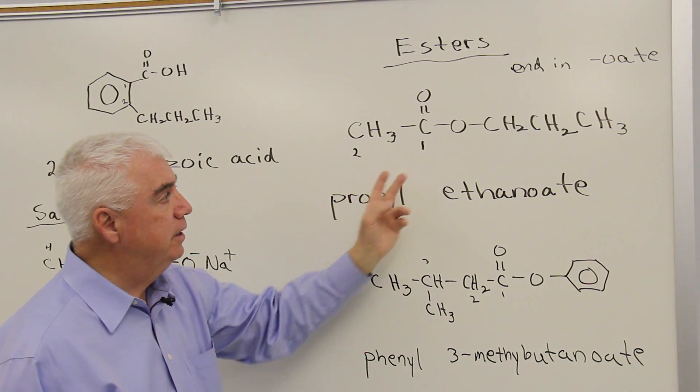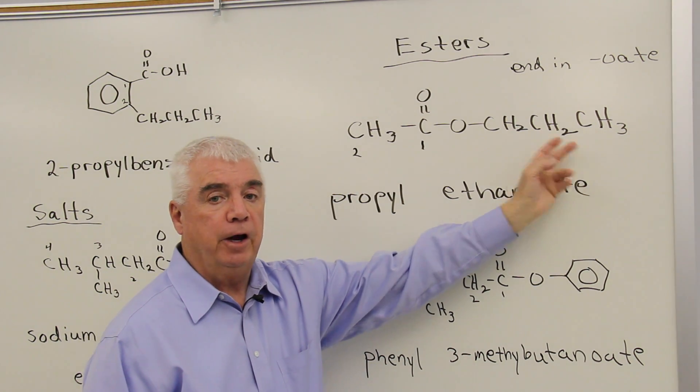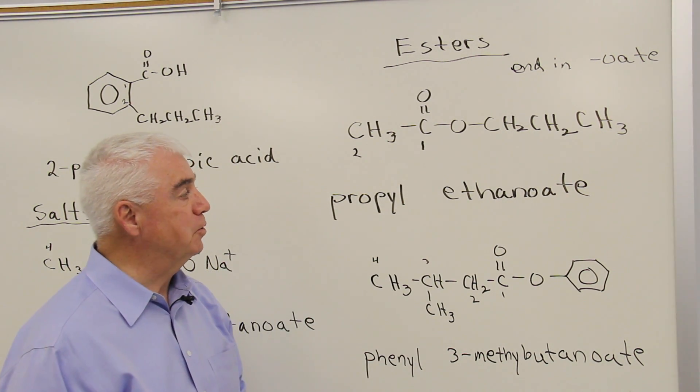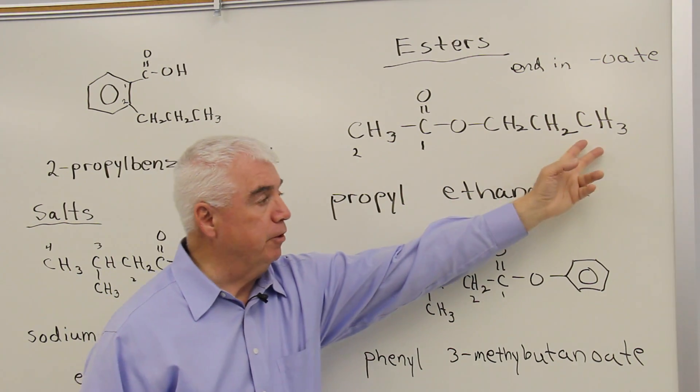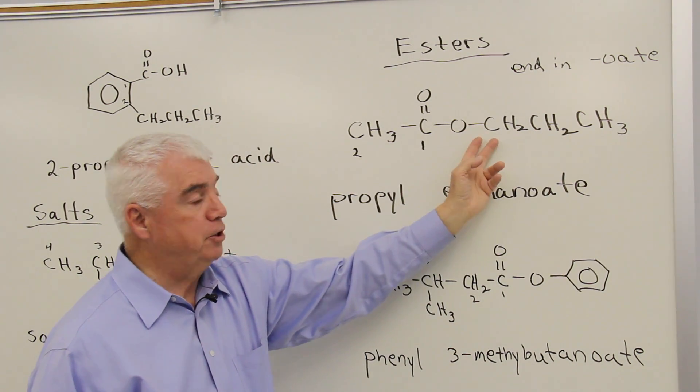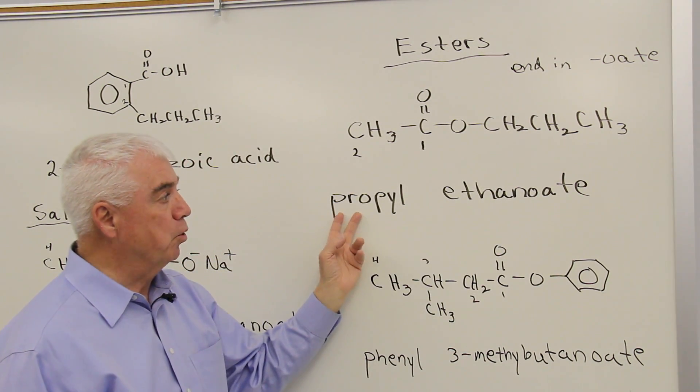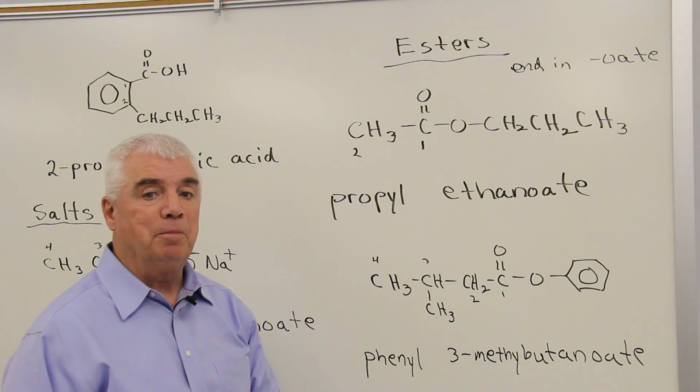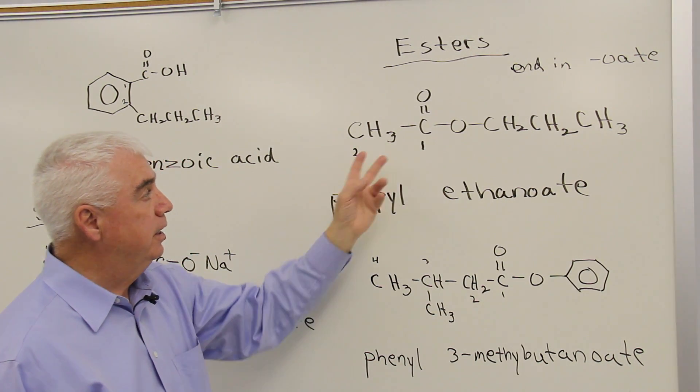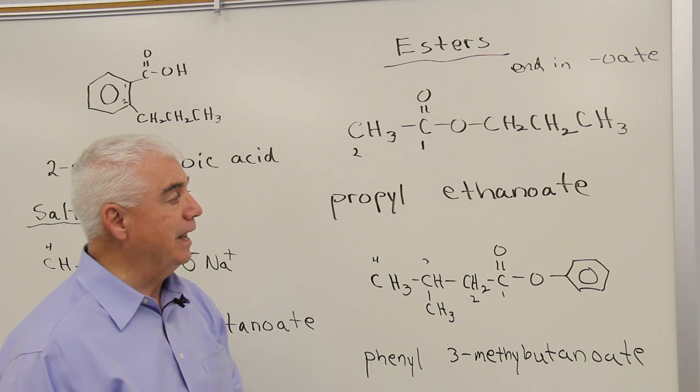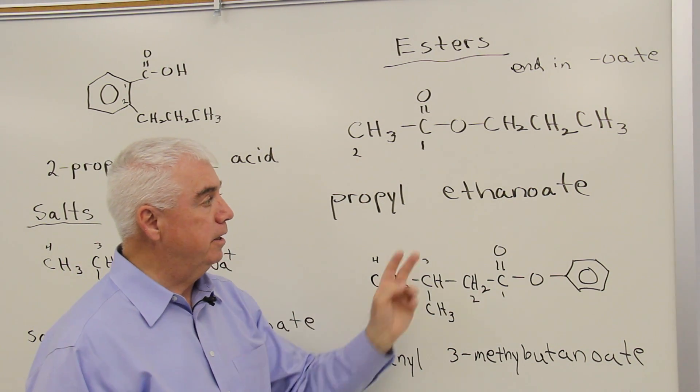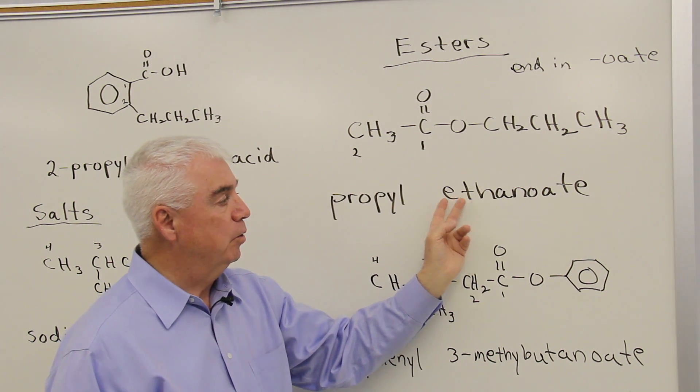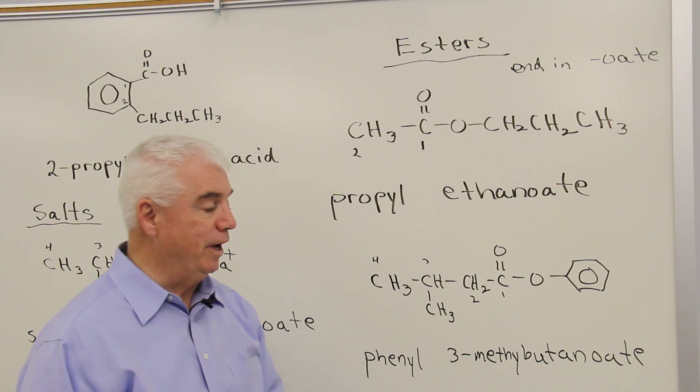The first word is the name of this group over here, whatever it is: methyl, ethyl, propyl, or isopropyl. In this case, we have a three-carbon group attached at the end carbon. It's a propyl group. Now we're concerned about naming the carboxylic acid portion. It's a two-carbon carboxylic acid. So the name would be derived from ethanoic acid. We change the oic to oate.